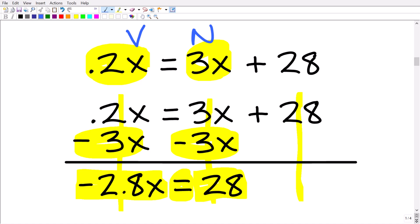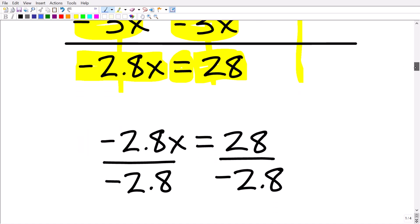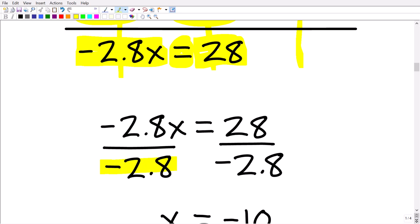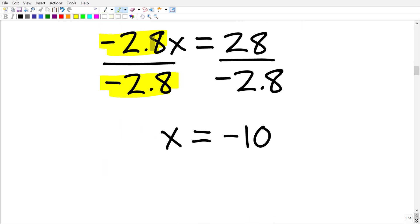All right, so what we need to do now is divide both sides of the equation by negative 2.8. Negative 2.8x divided by negative 2.8 is going to be what? Well, negative divided by negative is a positive or a positive 1. So our answer on the left-hand side is going to be a positive 1x or x. But remember the rule in algebra, whatever you do to one side of the equation, you have to do the exact same thing to the other side. So 28 divided by negative 2.8 is our answer. And of course, that is negative 10.